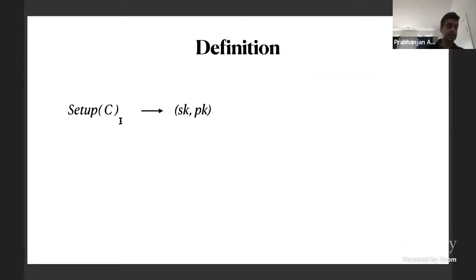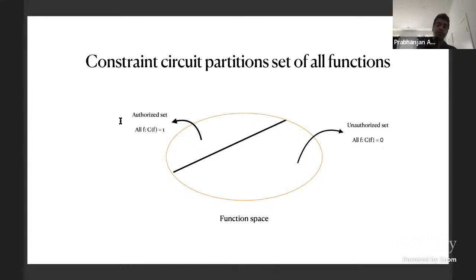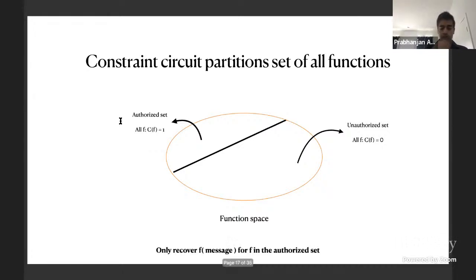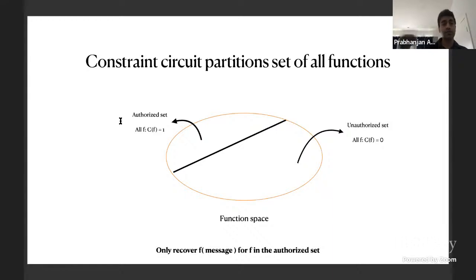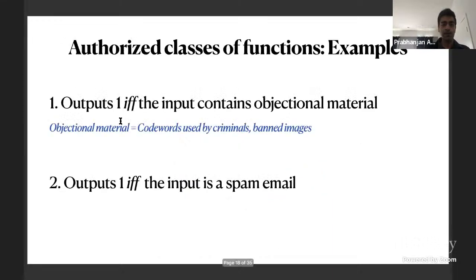Formally, the setup algorithm takes a constrained circuit c and outputs a secret key and a public key. The circuit c partitions all functions into an authorized set — where c(f) = 1 — and an unauthorized set. Given the decryption key, anyone can recover f(m) for any authorized function f, but should not be able to recover f(m) for unauthorized f.